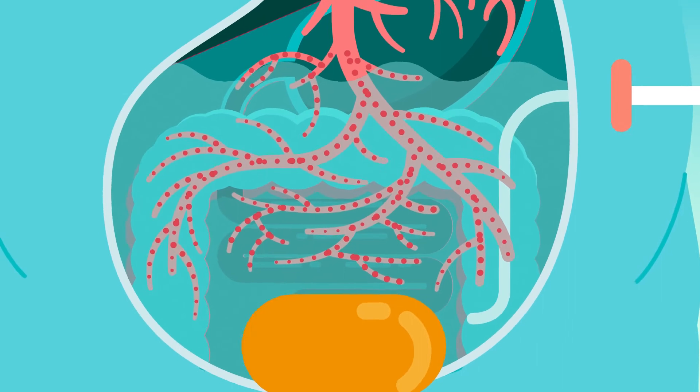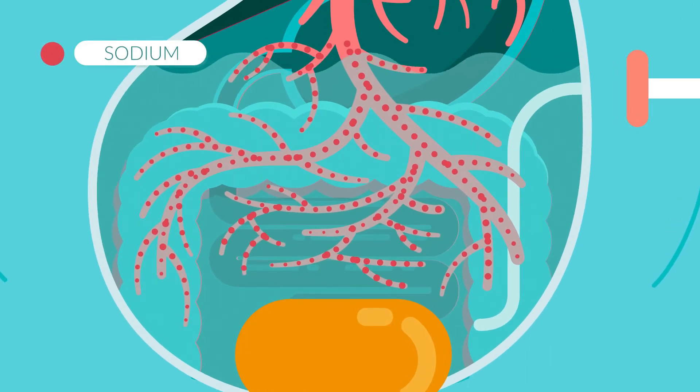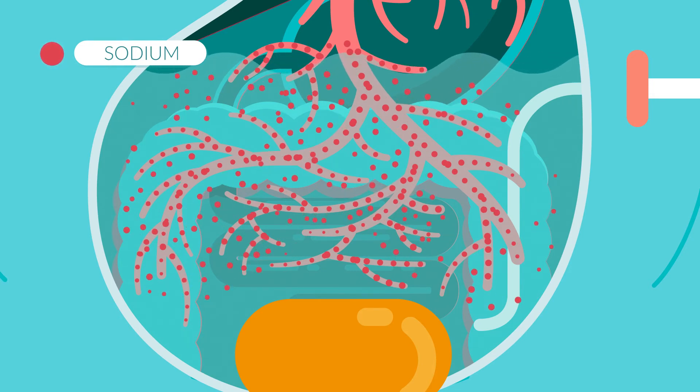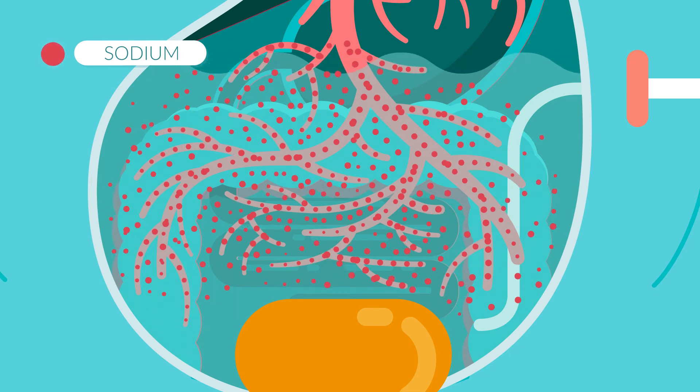The concentration of sodium in the blood is much higher than in DSR Infusate, so sodium diffuses from the blood, through the wall of the peritoneal cavity, into the DSR Infusate. The amount of sodium in the DSR Infusate gradually increases.